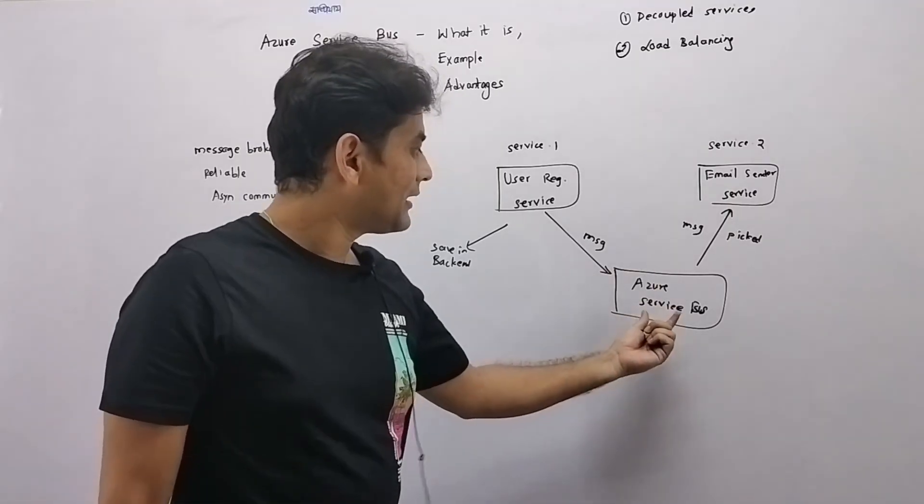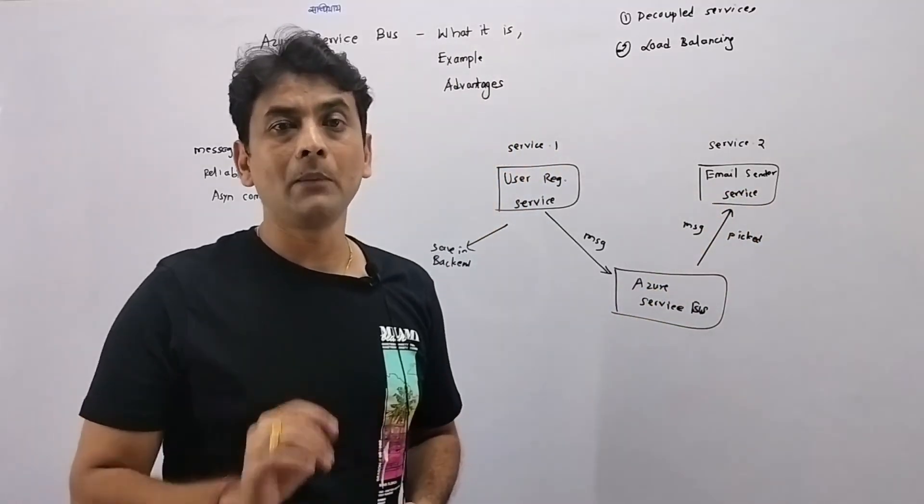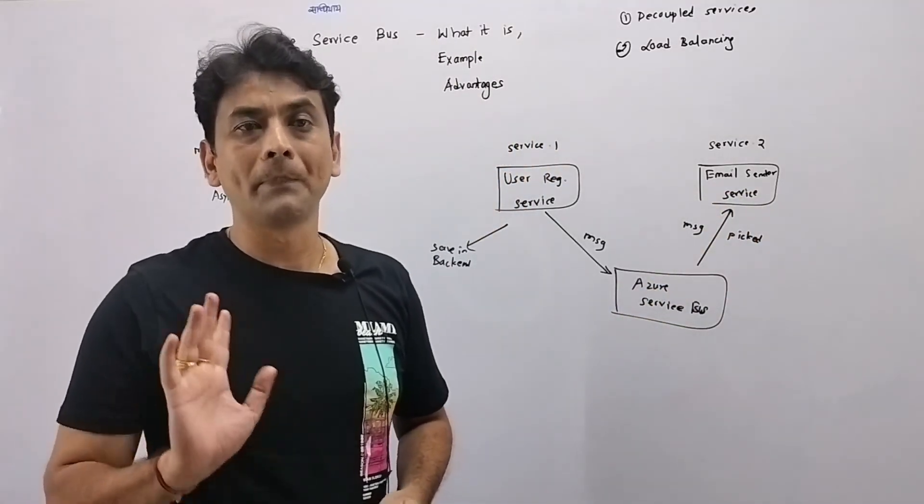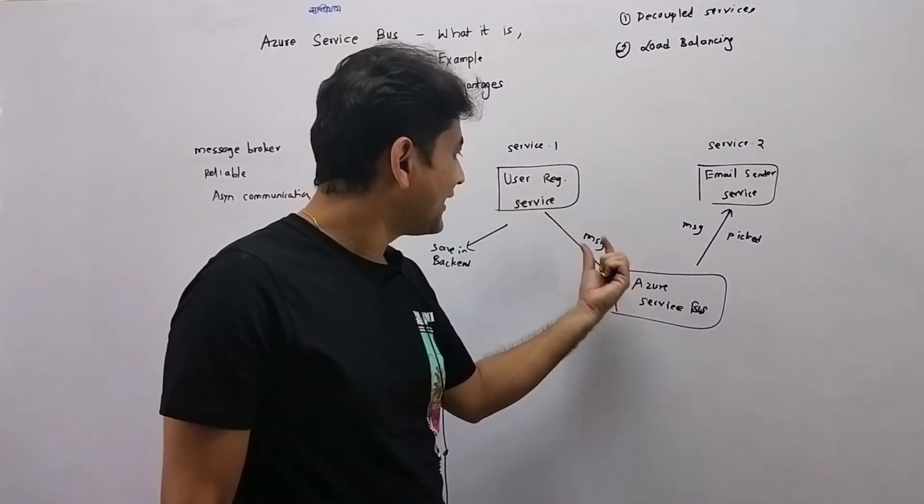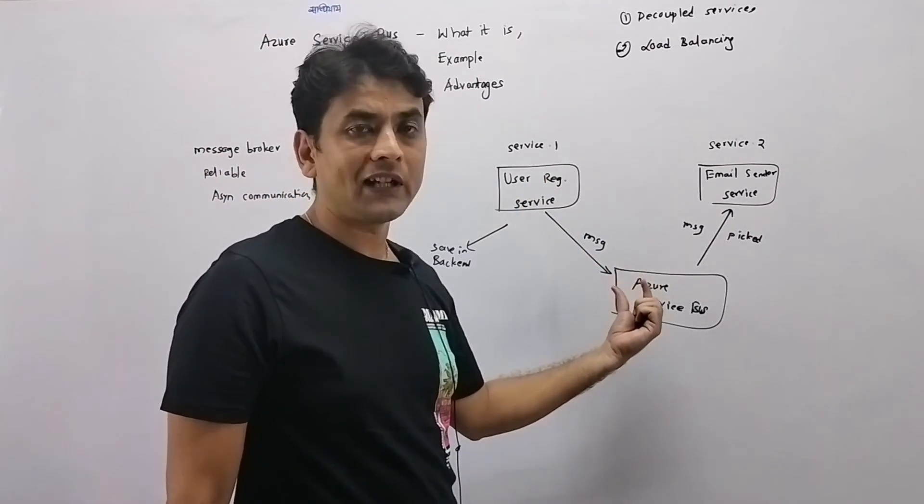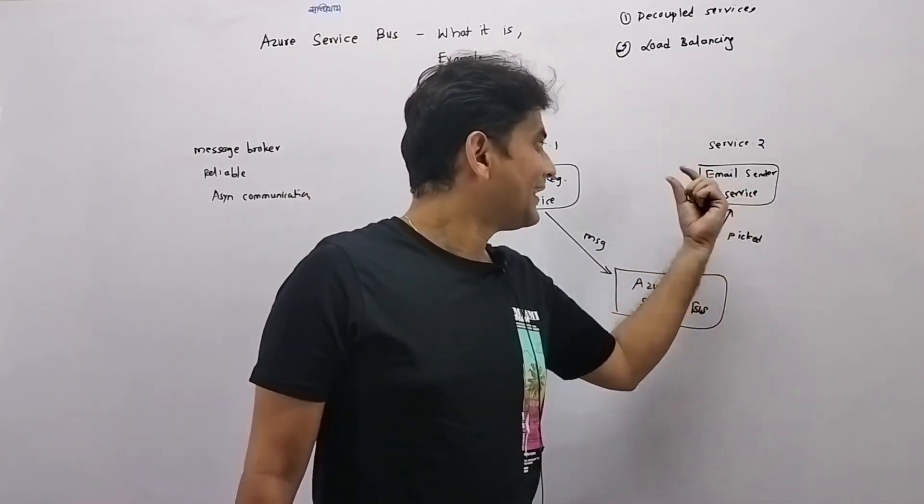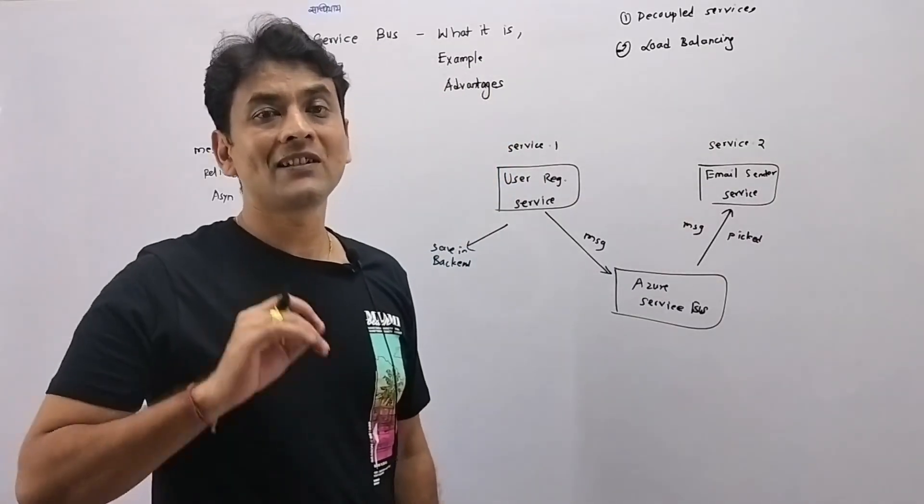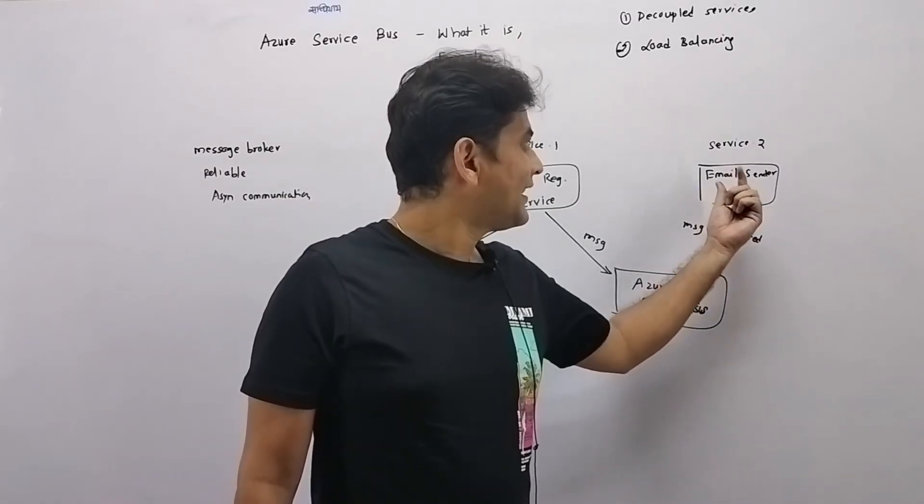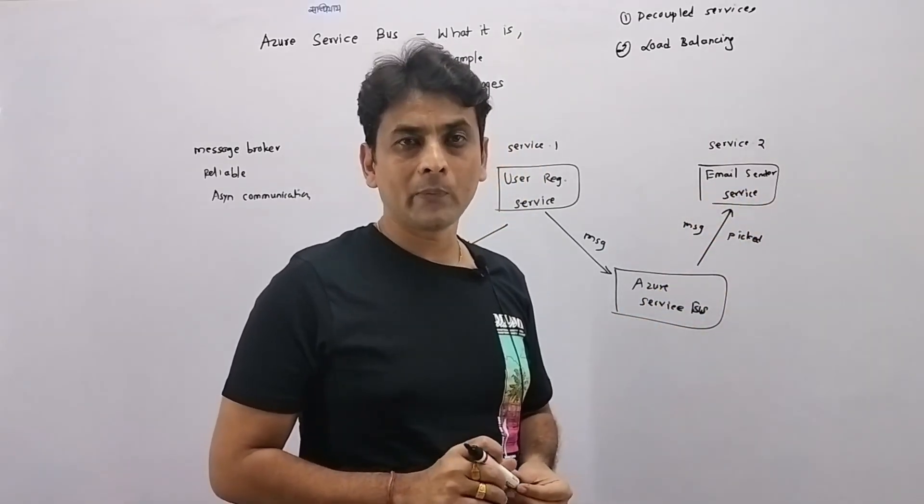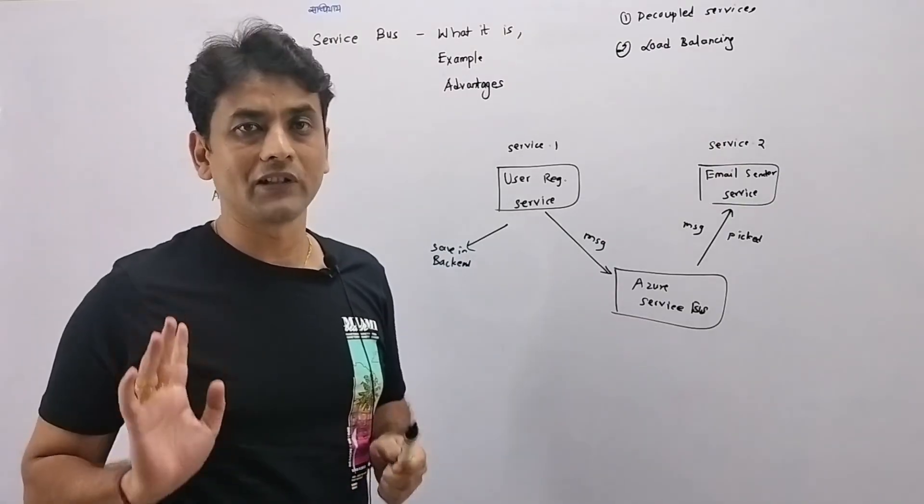when this service sends the messages to Azure Service Bus, once these messages are there, this email service will pick up messages at its own pace. So though the speed at which these messages are sent is high, that means within short time, huge number of messages are sent to this Azure Service Bus. But this email service will still work at its own pace. So that way we have made sure that this email service does not have performance issues. It does not go down or it does not get throttled.